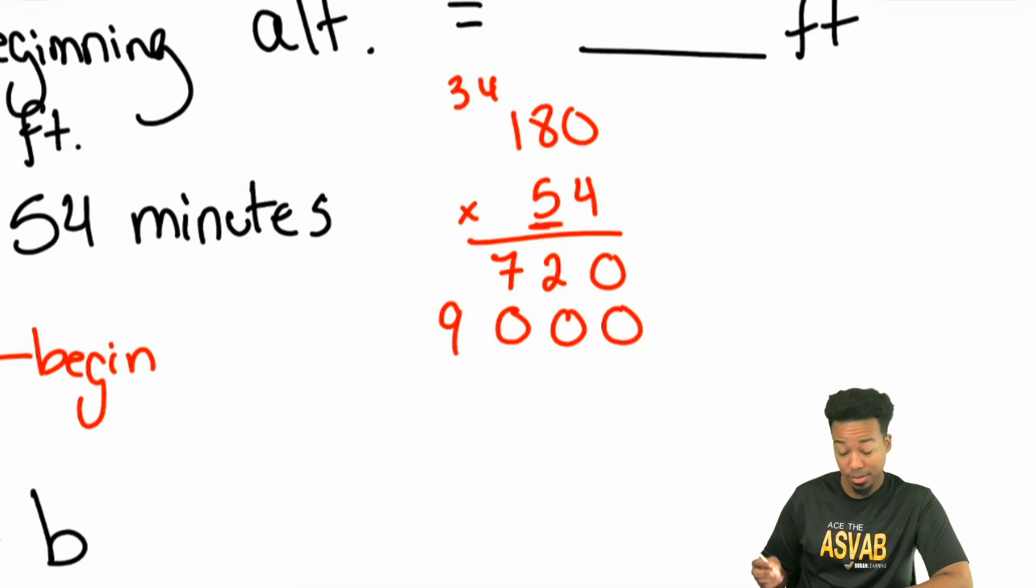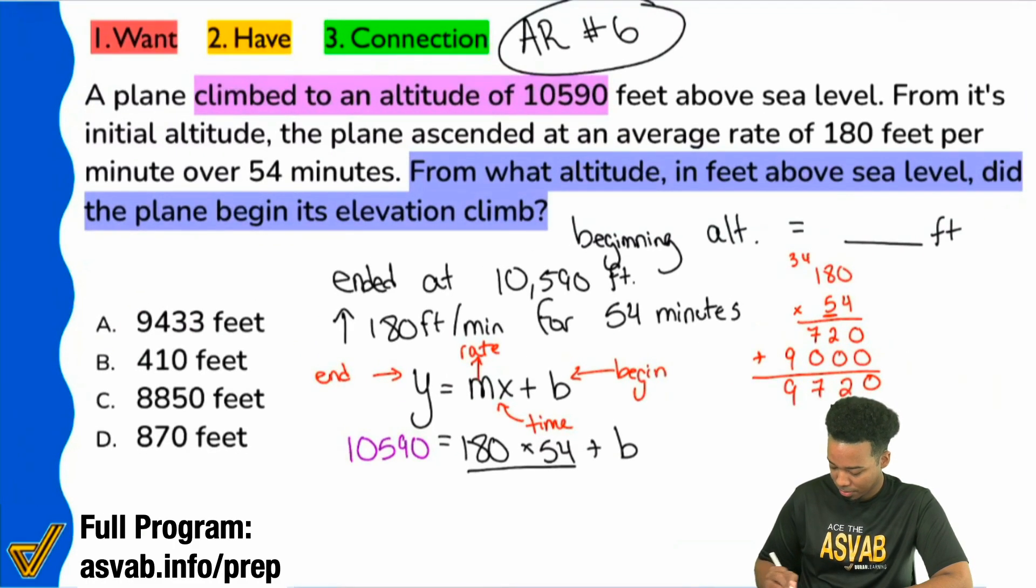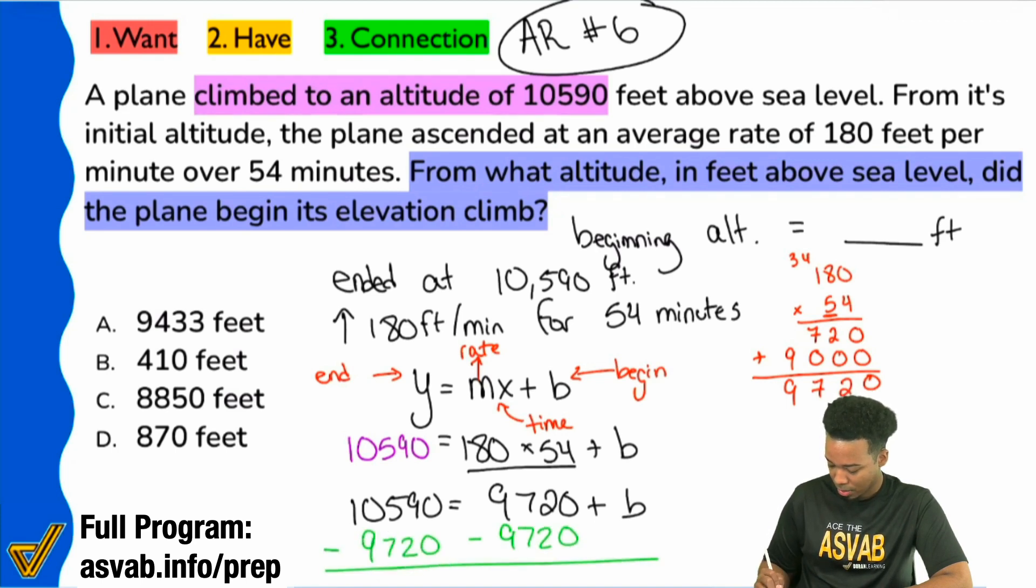Let me move this thing out of the way. And so now that we have 9,720, we will go ahead and add together 0, 2, 7, 9. And that's what we have here. So we'll write everything else out over again, and we have 10,590 equals 9,720 plus B. So all we have to do here at the end is subtract 9,720 from both sides, and we are done.